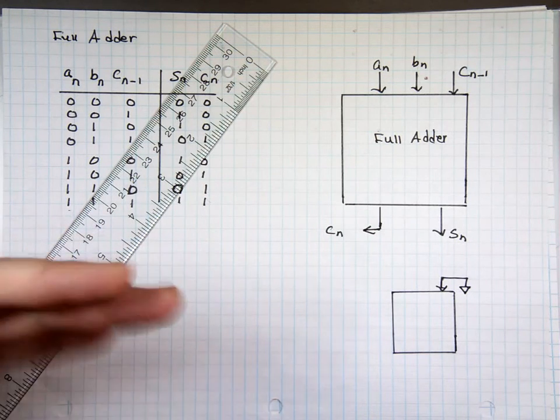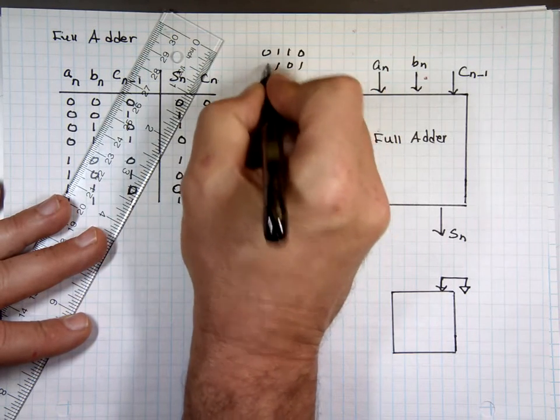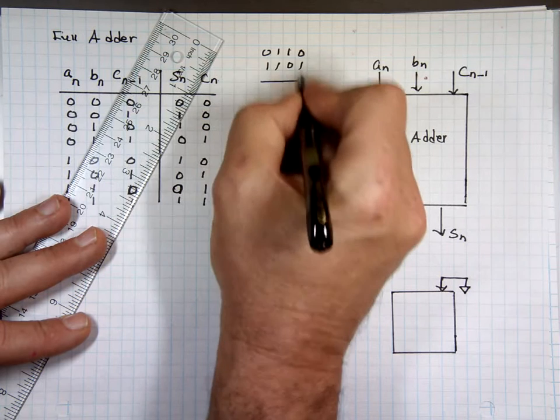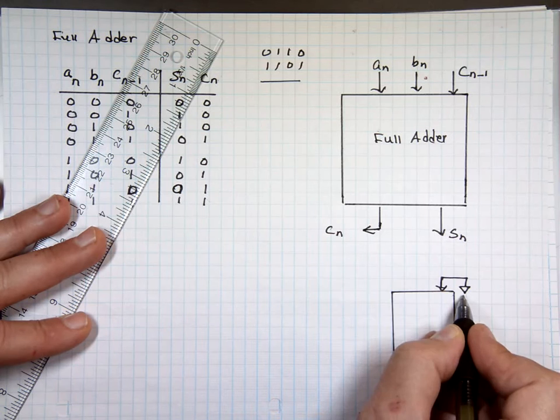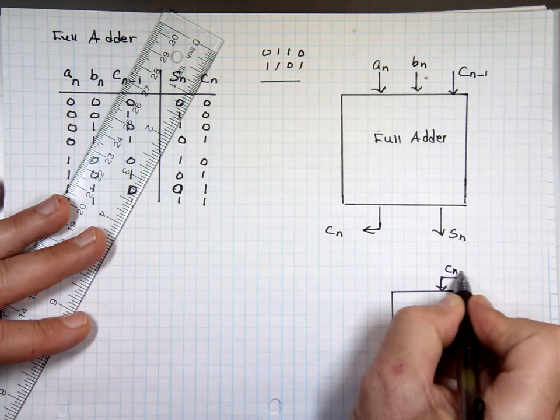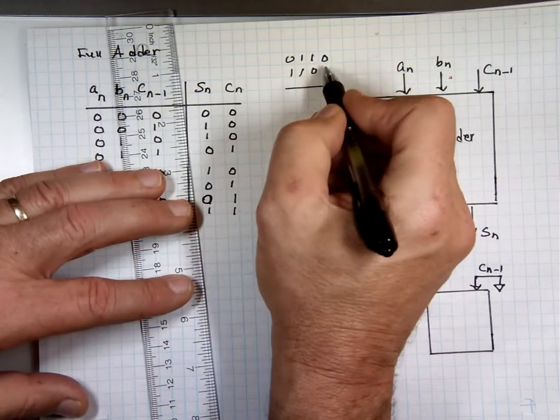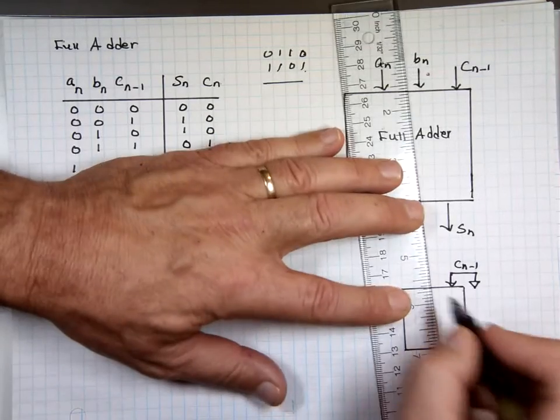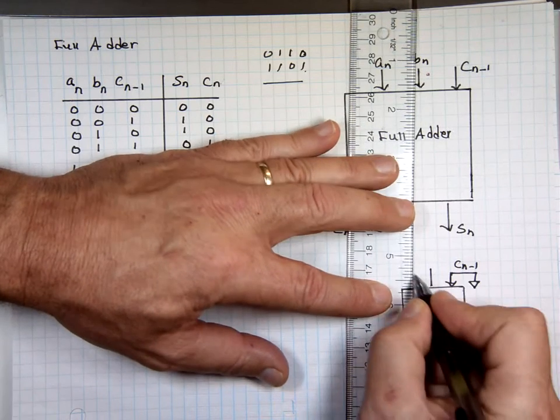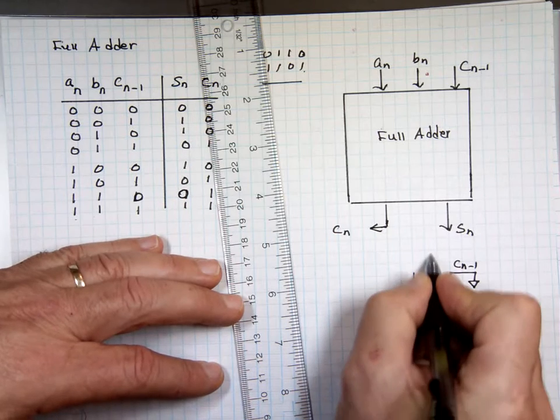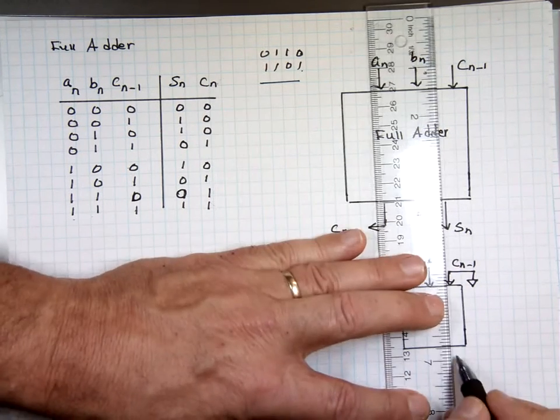The first bit when you're adding 4, when you're adding 0, 1, 1, 0 to 1, 0, 1, 1, there is no carry when you're adding these two. There's no carry, just 0 plus 1. So that's why that's attached to ground. That's the Cn minus 1. In case, so then this is the first bit. We'll call it the A0 and the B0. And this would be the first sum, S0.